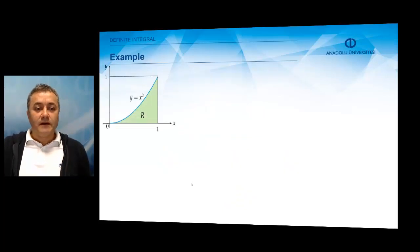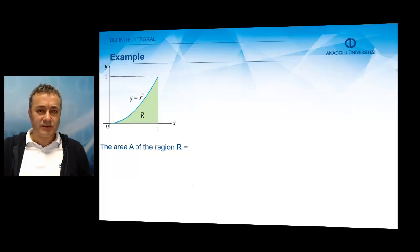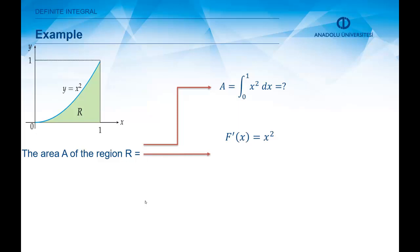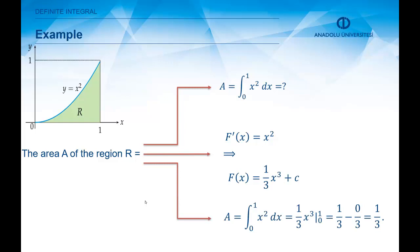Let's see this on an example. Let us find the area of the region R bounded by the curve y equals x squared from 0 to 1. It's a very difficult area to calculate by hand, but let's use the Fundamental Theorem. The area is the integral of x squared from 0 to 1. The antiderivative of x squared — the function whose derivative gives x squared — is x cubed over 3. So by the Fundamental Theorem, the integral of x squared from 0 to 1 is x cubed over 3 evaluated at the limits, which gives 1 over 3 minus 0, so the final result is 1 over 3 units squared.